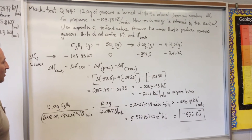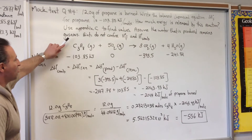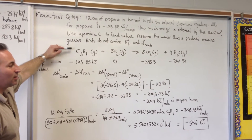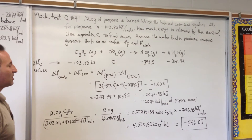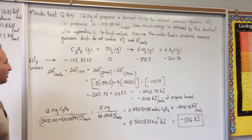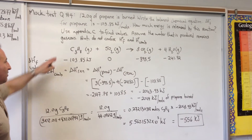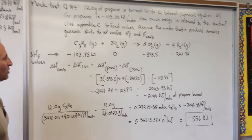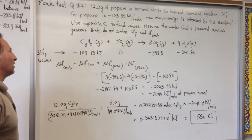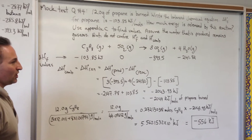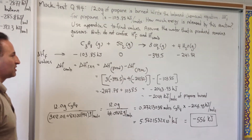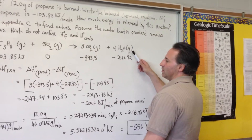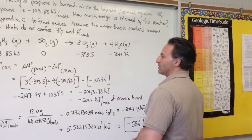Assume that the water produced remains gaseous. This is an important point, because there's a large energy difference between gaseous water and liquid water. Just think about how much energy it takes to boil a liter of water and turn it completely into steam — that's the difference between ΔH°f of H₂O(l) and ΔH°f of H₂O(g). It's important to notice which symbol is written in the balanced equation.